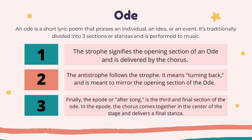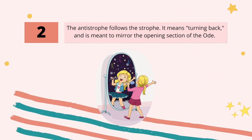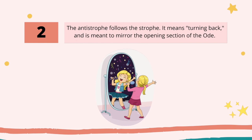Odes are traditionally divided into three sections or stanzas. The first is the strophe, which signifies the opening section of an ode. In this strophe, you can describe in detail the person or thing you are writing about. The second section of an ode is called the antistrophe. It means turning back and is meant to mirror the opening section of an ode. There's a lot of repetition in this section.